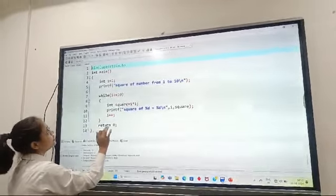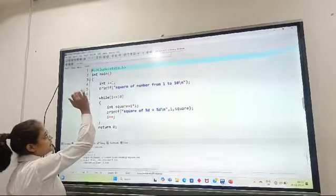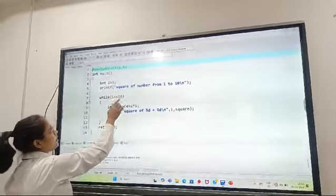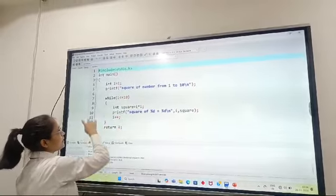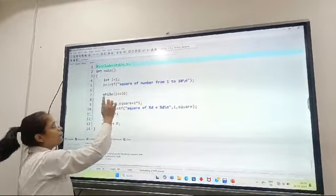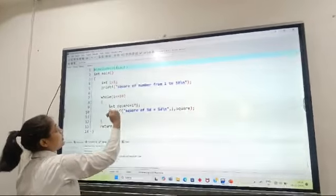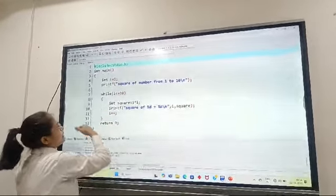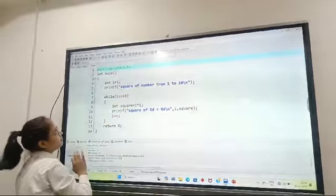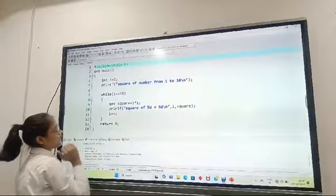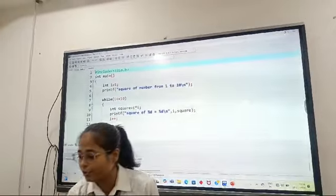Then we return 0 because we have written int main. When the condition is true, it will print the square of 1, then increment will take place, then i becomes 2, then again the condition is checked. This will continue and so on, and when the condition becomes false, we will come outside the loop. Now let's see the output.